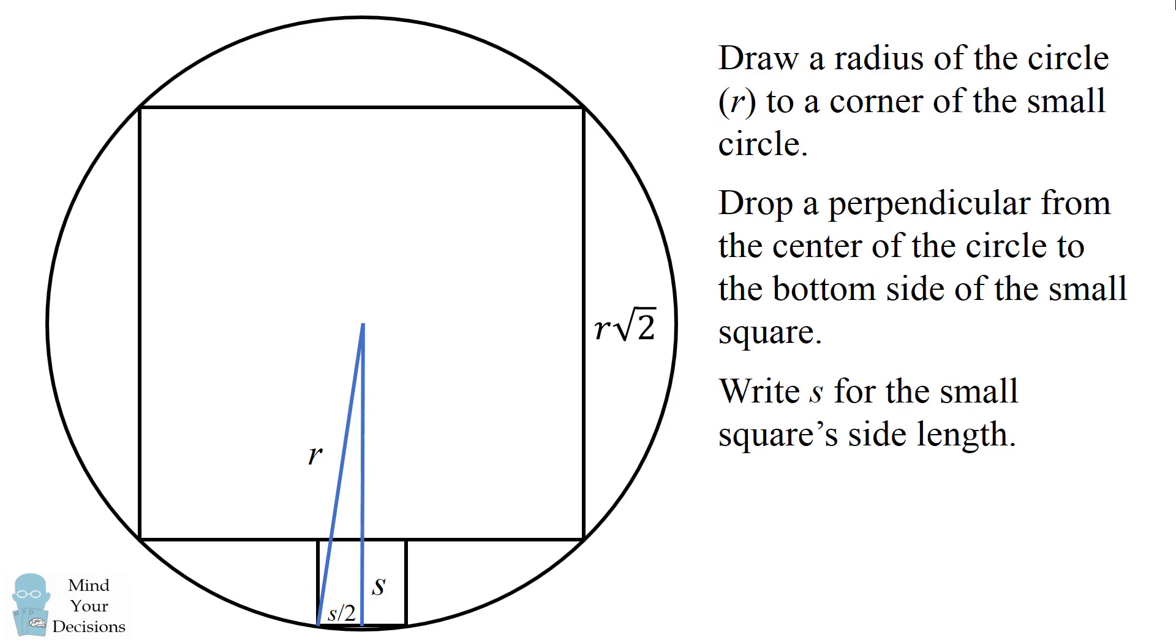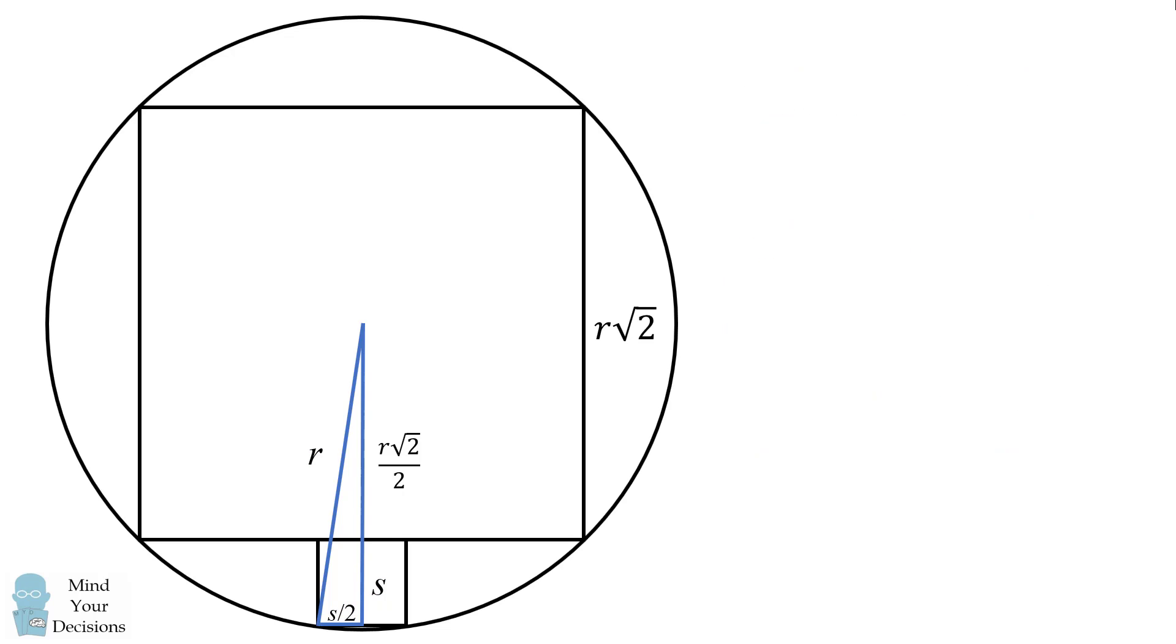The remaining length will be half of the larger square's side. This will be r√2 divided by 2. So now we have a right triangle and we know all of the lengths. So let's just focus on this triangle.